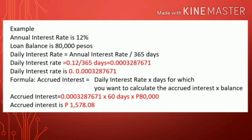Example 3: The annual interest rate is 12% and the loan balance is 80,000 pesos. Daily interest rate equals 0.12 divided by 365 days, which equals 0.0003287671. Accrued interest equals 0.0003287671 times 60 days times 80,000 pesos. Accrued interest is 1,578.08 pesos. Thank you for watching.